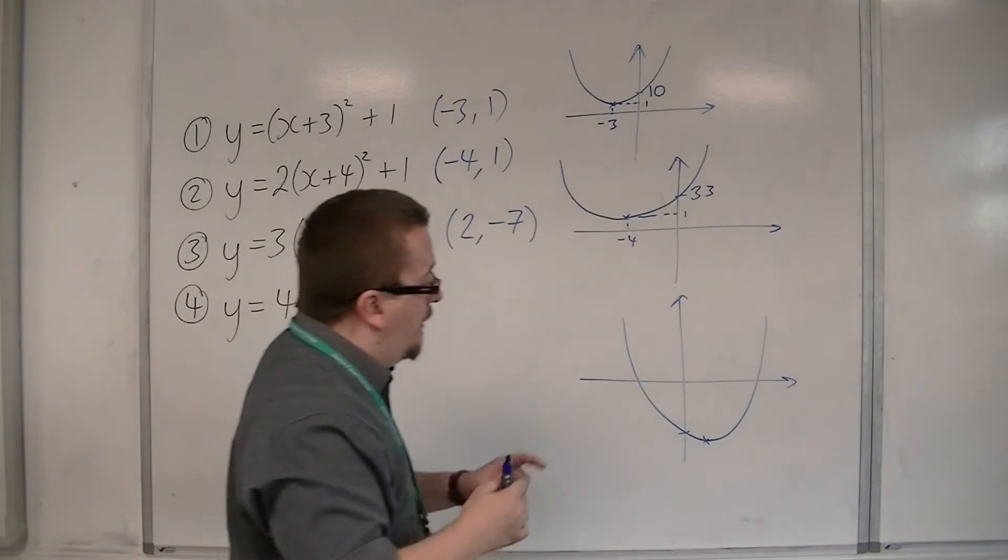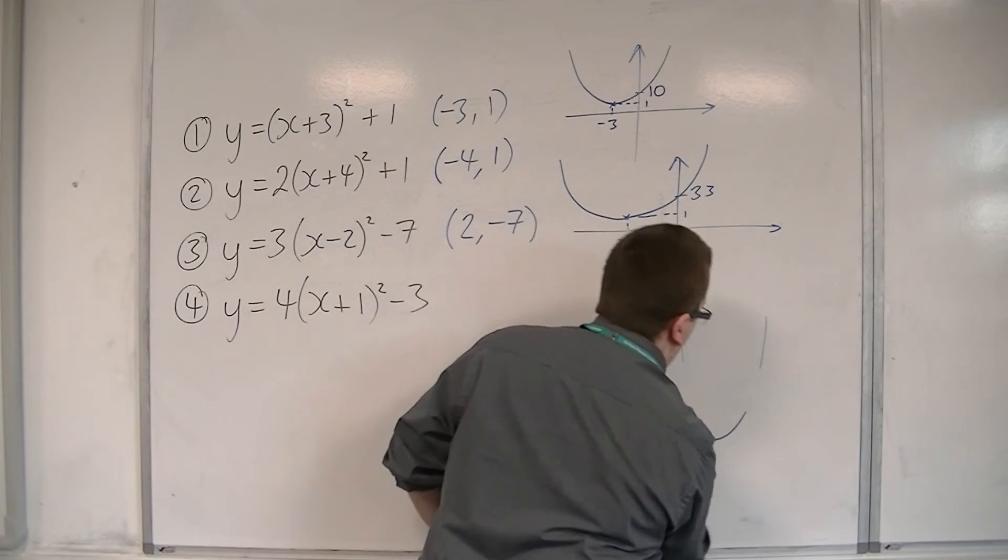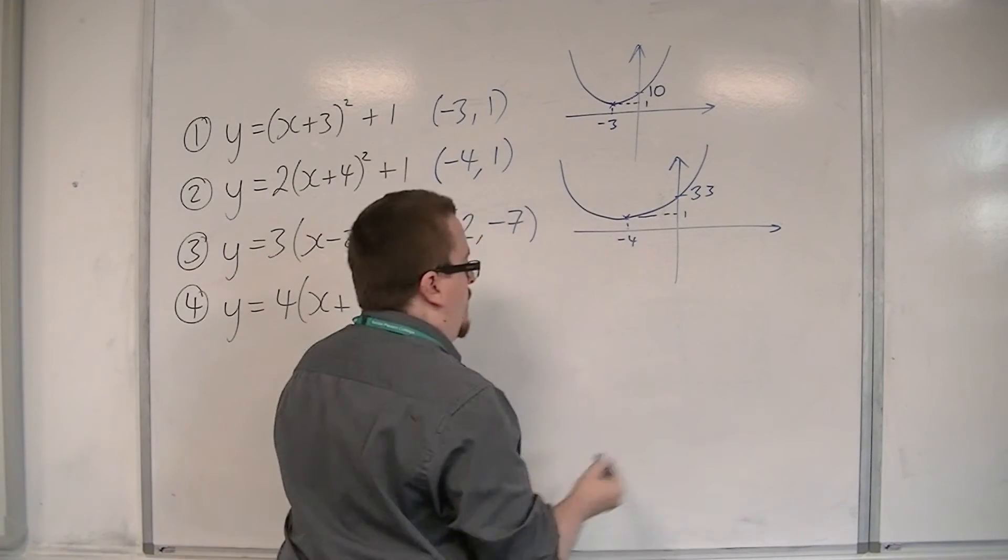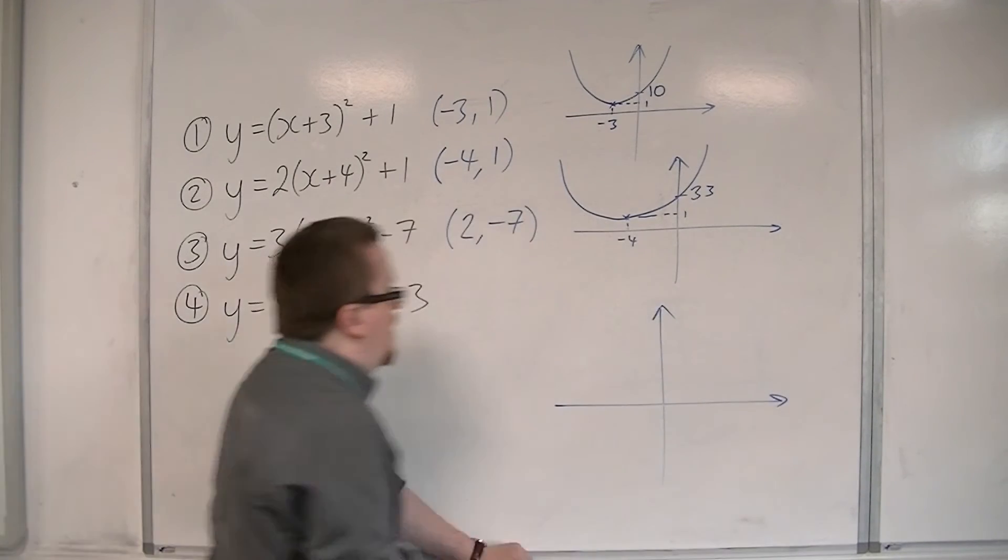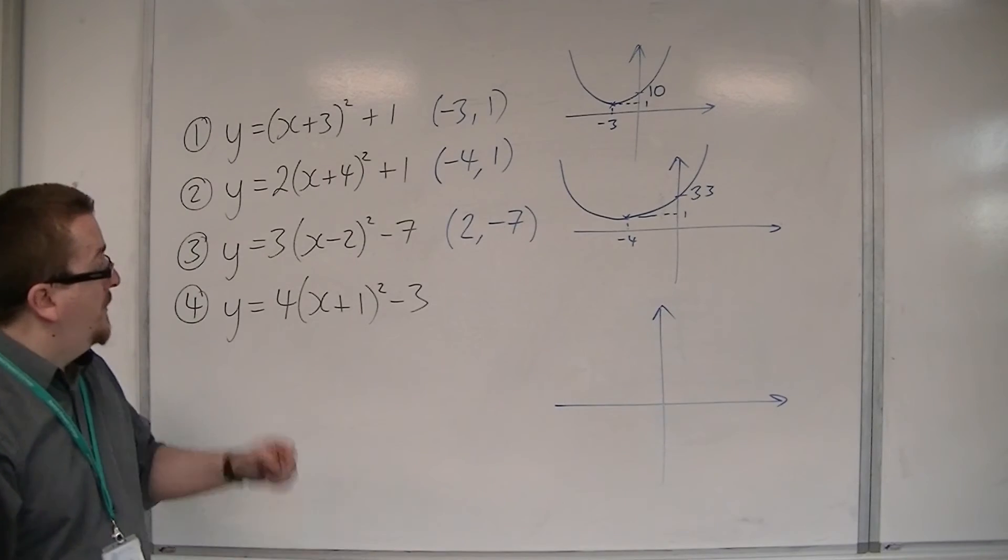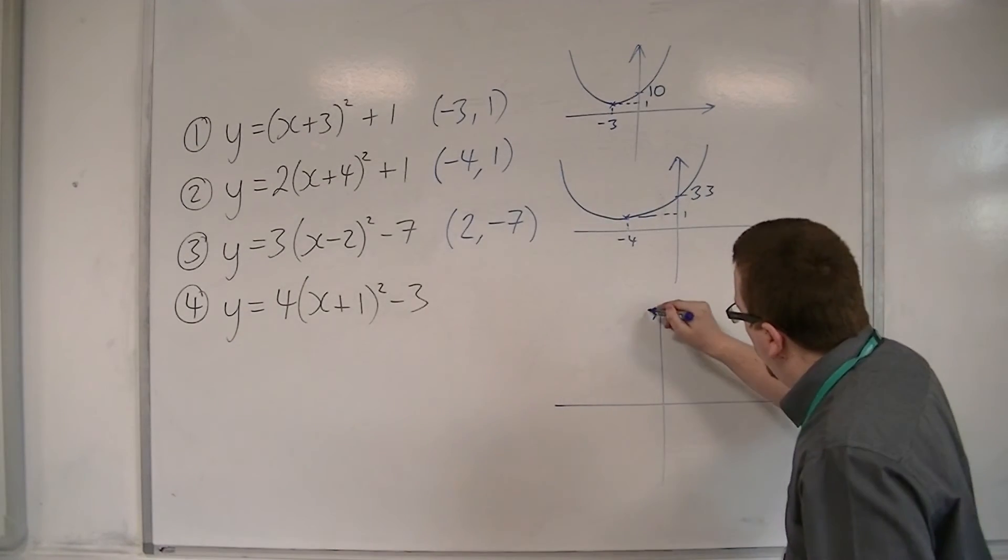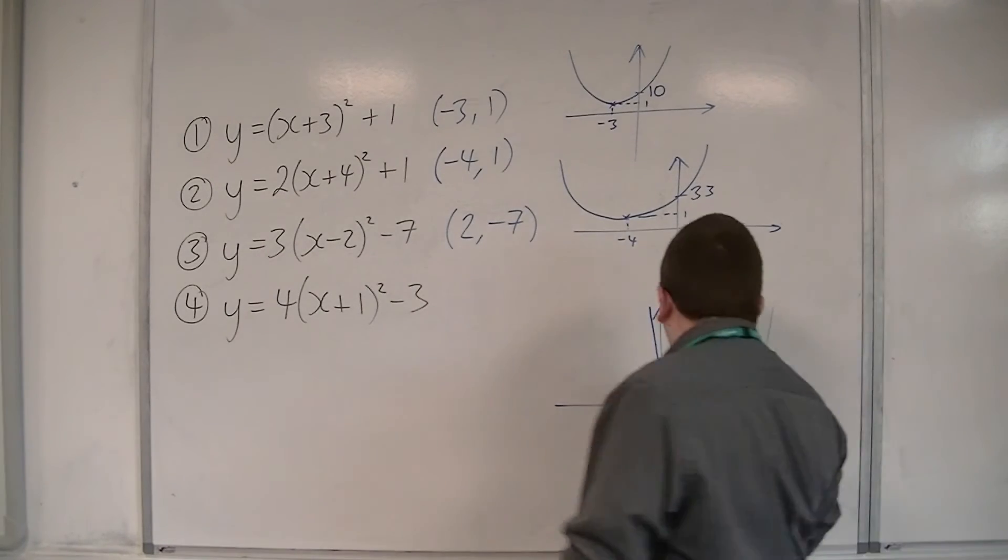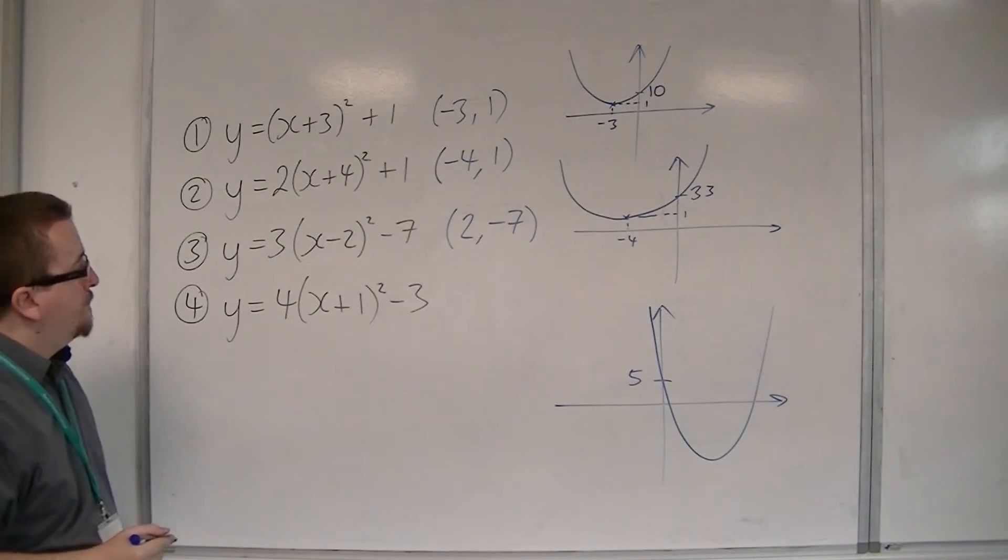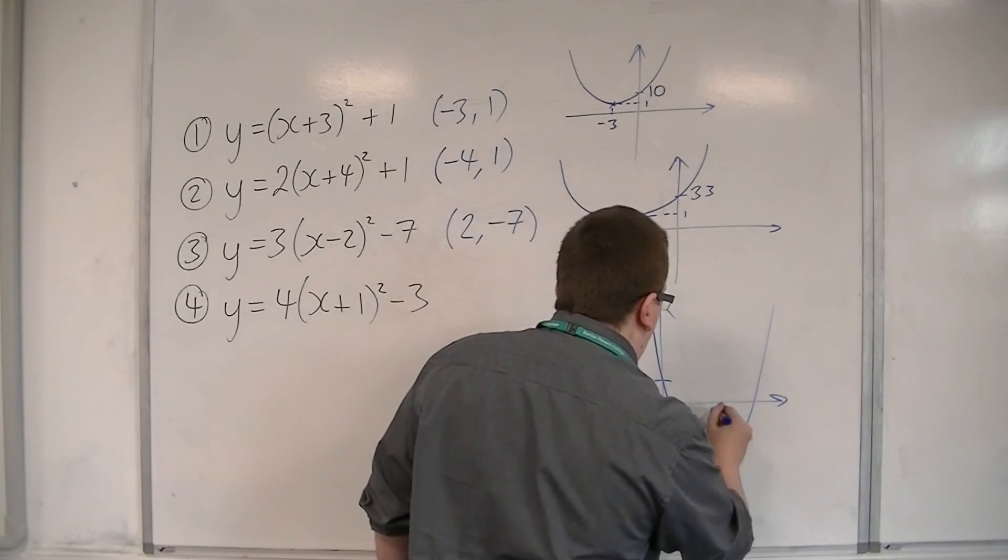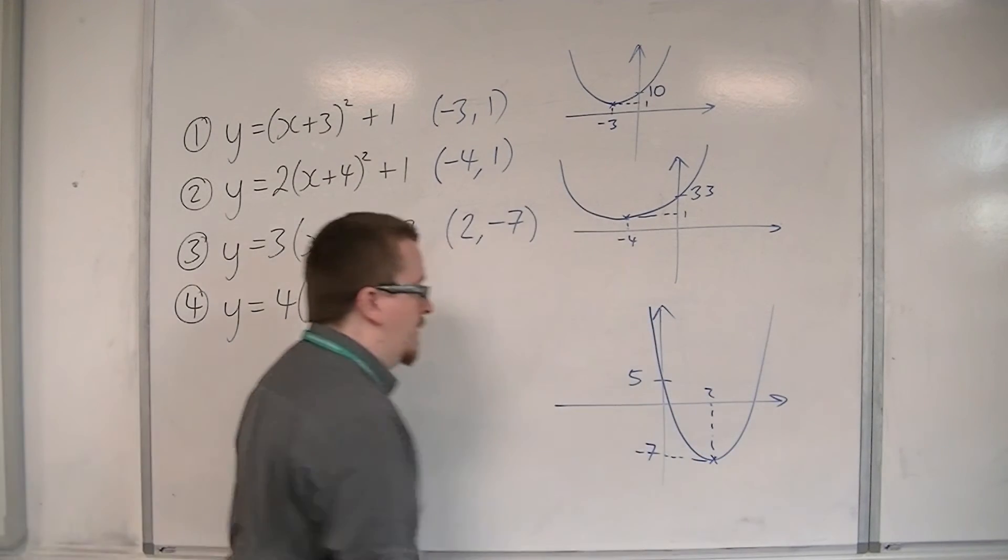So actually, I've drawn this incorrectly because the crossing point should be up here. So let's try that again. Usually best to show the vertex and then figure out where it's crossing the y-axis. So it'll look something more like that. So it's crossing the y-axis at 5. And this is the coordinate 2, minus 7. So that's better.